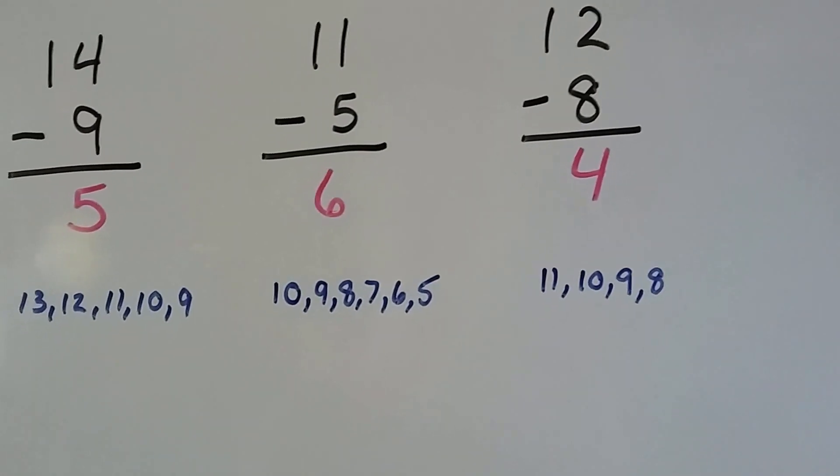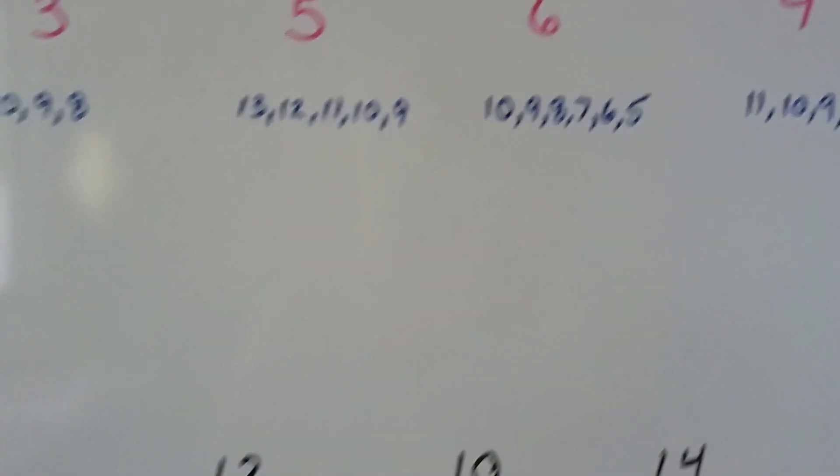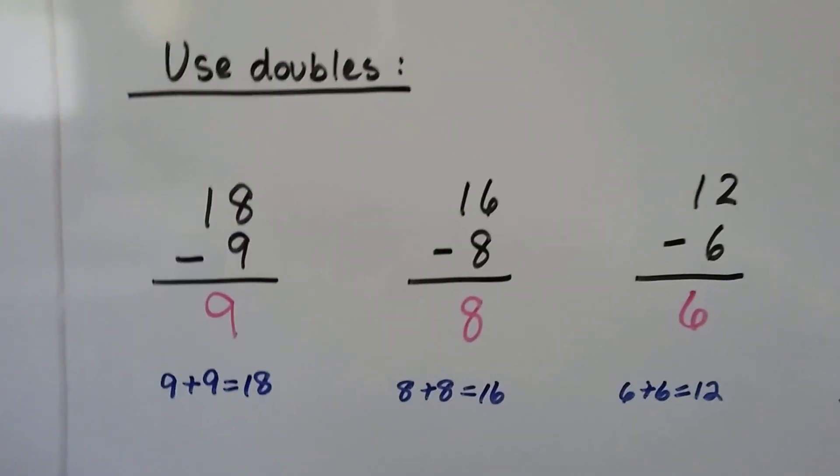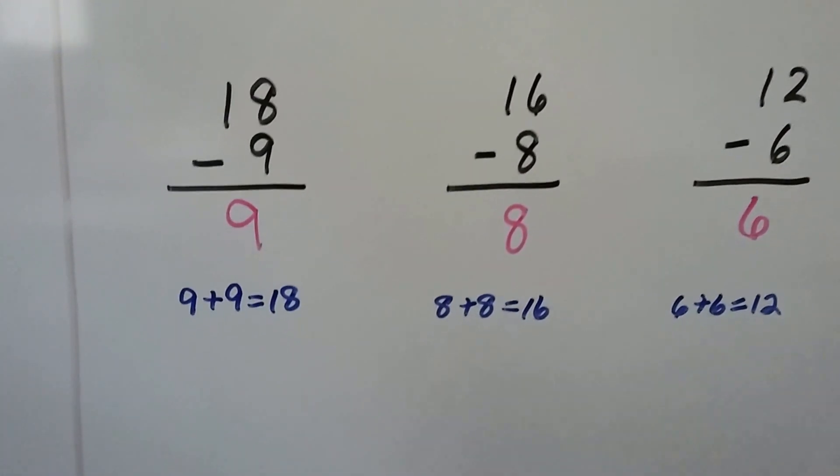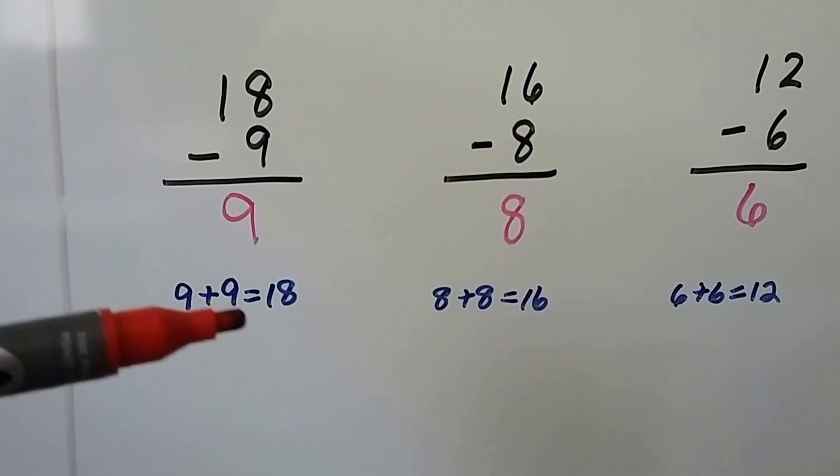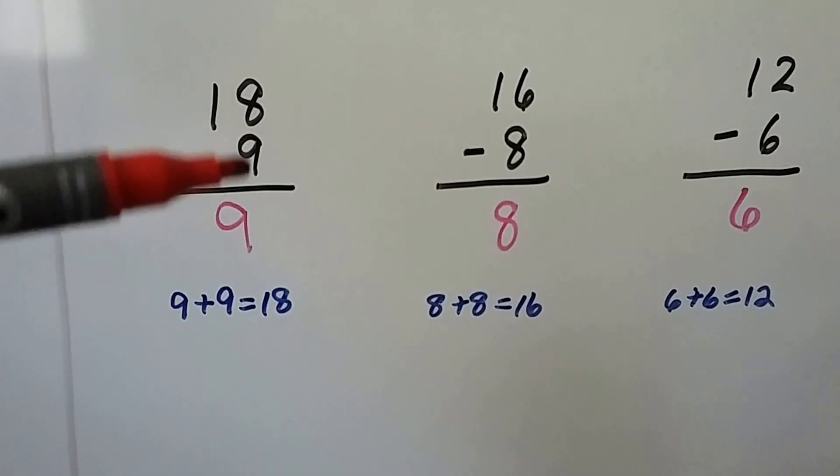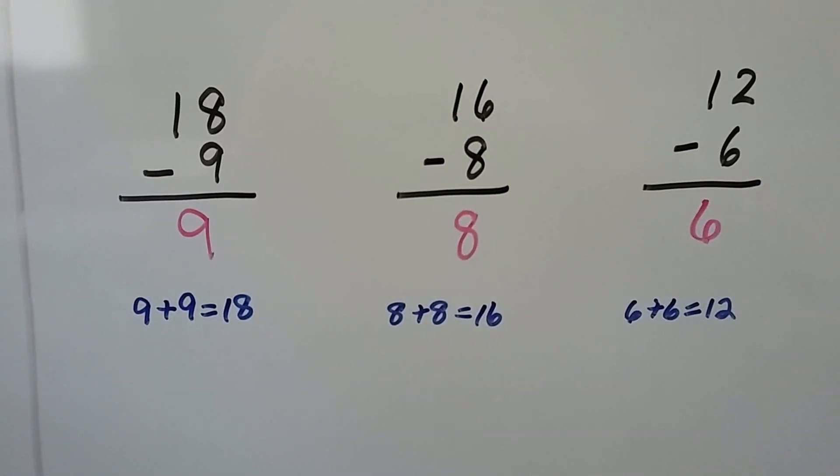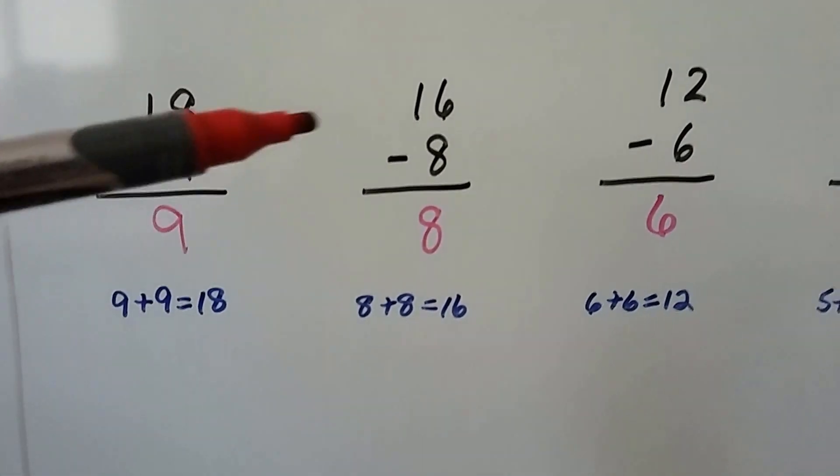When we use doubles, we think of the addition sentence that uses doubles. 18 minus 9: 9 plus 9 equals 18, so it's missing a 9. 18 minus 9 is 9. We think 8 plus 8 is 16, so the missing related double is 8.